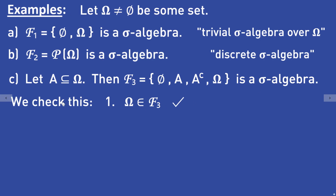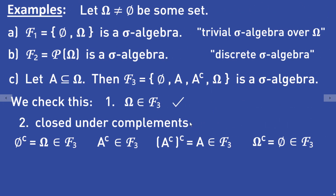Let's check this. Omega is in the set. The complement of each subset is in the set again: the complement of the empty set equals omega, which is in the set; the complement of A is in the set; the complement of the complement of A equals A, which is in the set; and the complement of omega equals the empty set, which is in the set. So the set is closed under complements.